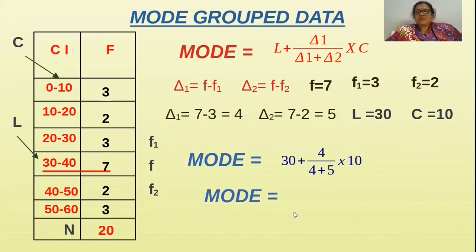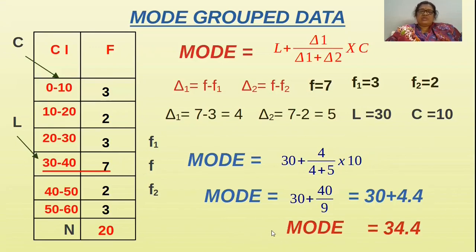Now the simplification. 4 into 10 is 40, 5 plus 4 is 9. When you divide 40 with 9 you will get 4.4. When you add you will get the mode as 34.4. This is very easy method and this is the formula. When you do like this you will get 100% marks. This is very easy method to find out the mode of data.